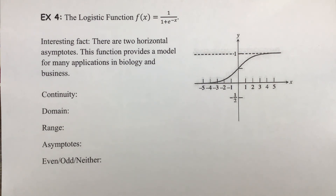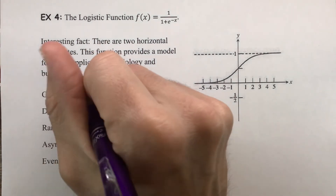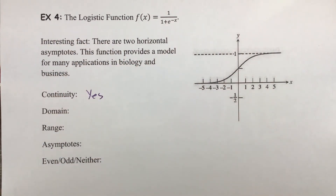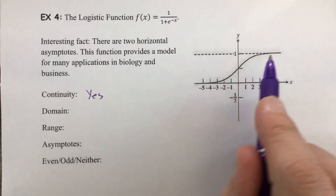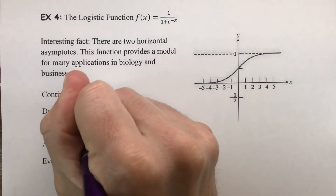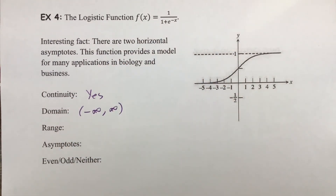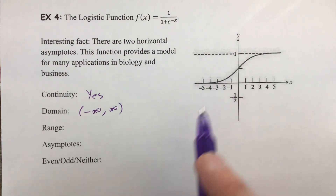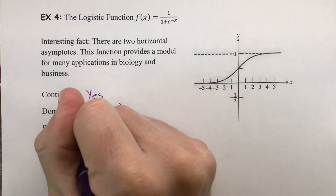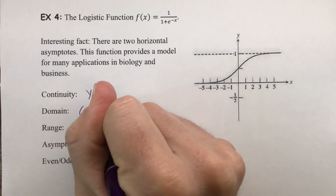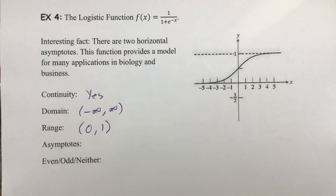Looking at the logistic graph: does it have continuity? There are no breaks, so yes, it is continuous. The domain is all real numbers — it extends forever to the left and right, negative infinity to infinity. The range is bounded both below and above by asymptotes, so both bounds are open intervals. The range is the open interval from zero to one.